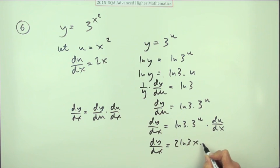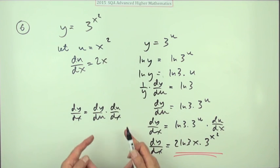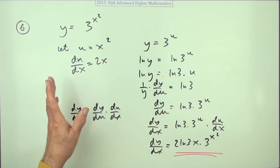Which means that I finally get dy/dx equals, and since that's 2x I'll just take that to the front, 2 ln 3 x times 3 to, and of course u was x squared. So it wasn't quite as simple as it implied in the marking scheme to employ this substitution and get involved in the chain rule. The very first way was the best way.